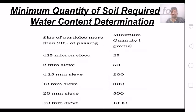We have to analyze the grain size of the soil. In a 425-micron sieve, 90% of the soil passes and we need 25 grams. One micron is 10 raised to minus 6 meters. For 2 mm sieve, 90% of the soil requires 50 grams. For 4.75 mm, 200 grams. For 10 mm, 300 grams. For 20 mm, 500 grams. For 40 mm, 1000 grams. We have to analyze the water content determination.